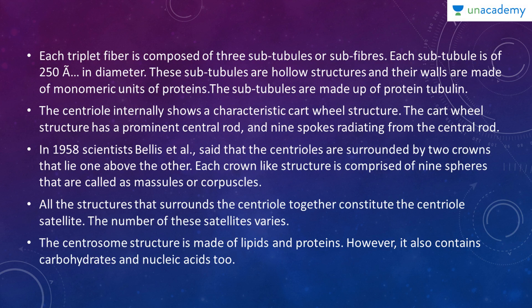Each triplet fiber is composed of three sub-tubules. Each sub-tubule is 250 angstroms in diameter. These sub-tubules are hollow structures whose walls are made of monomeric units of the protein tubulin. Centrioles internally show a characteristic cartwheel structure, which has a prominent central rod and nine spokes radiating from the central rod.